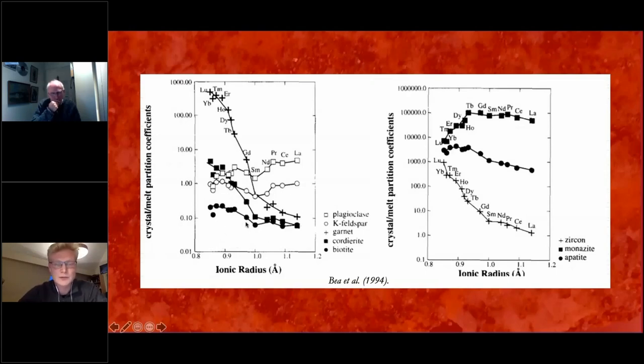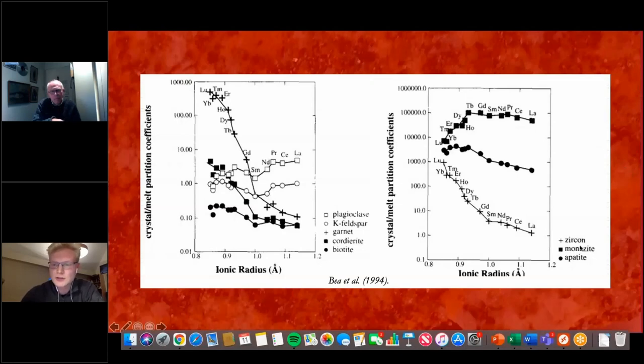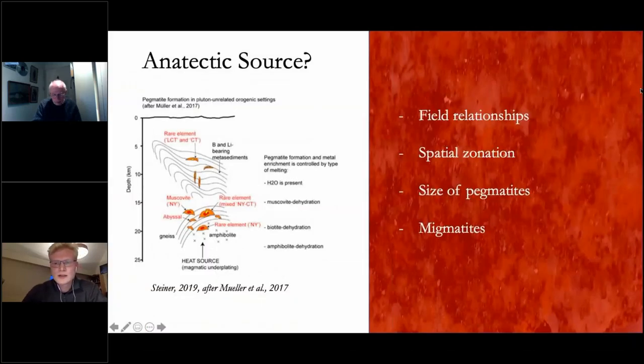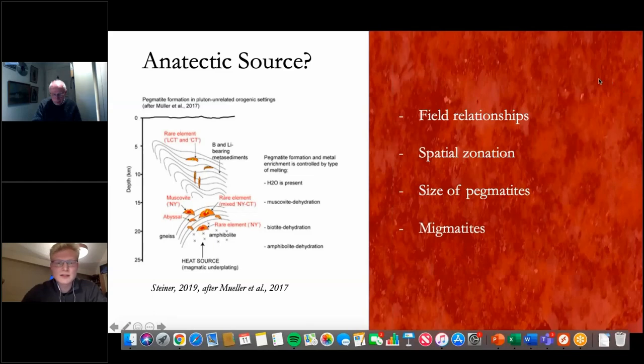Looking at these partition coefficients of various rare earth elements into different minerals that you might expect to see in a granite - the partition coefficient basically being a ratio of how likely an element is to go into a crystal rather than a melt - you can see that biotite and K-feldspar are generally below one. If a melt was just crystallising biotite and K-feldspar, you'd expect rare earth elements to increase in concentration in the melt. However, if you look at these accessory minerals - zircon, monazite and apatite - they all have partition coefficients greater than one, some significantly so. This is important because it explains why the rare earth elements aren't increasing in concentration in the mineralised pegmatites. You'd only need a tiny amount of monazite in particular to basically strip rare earth elements from the melt.